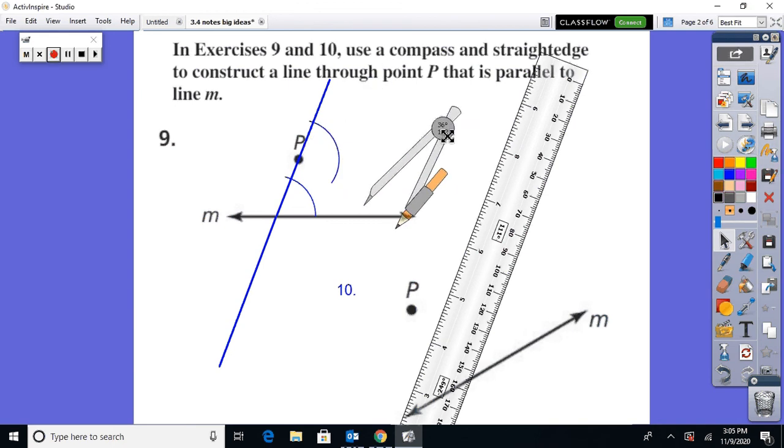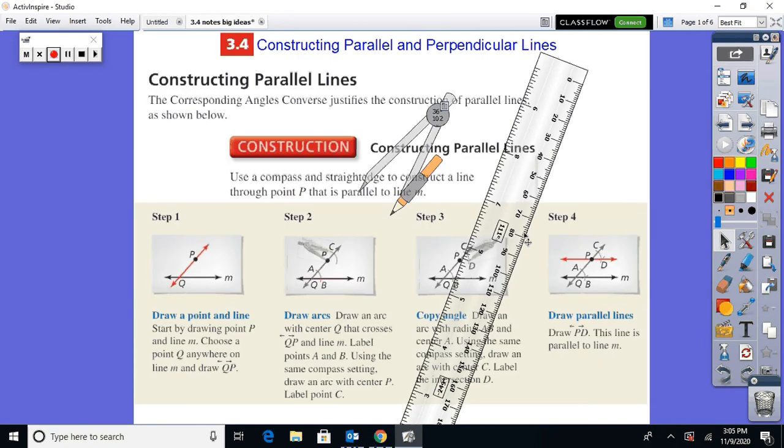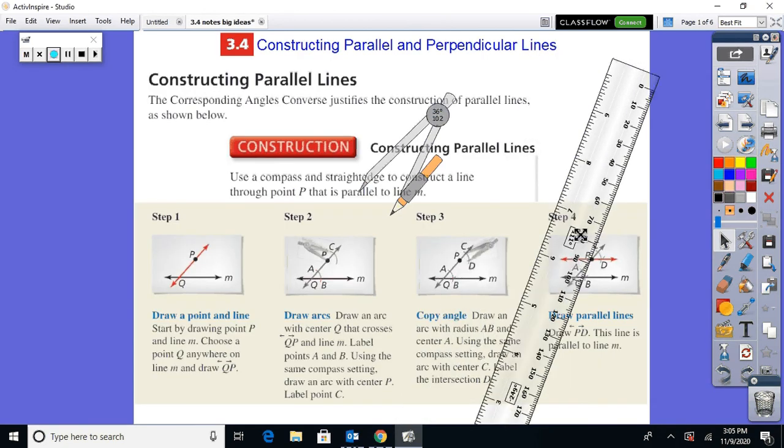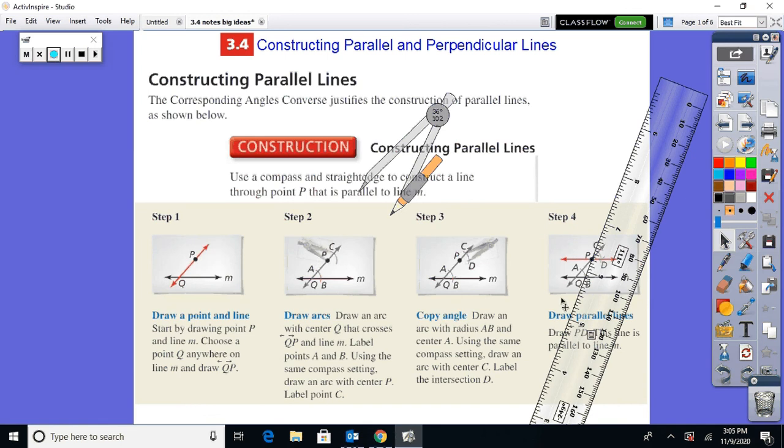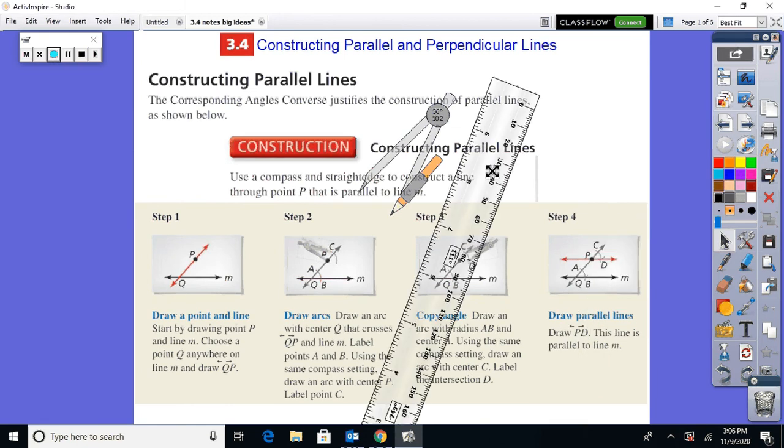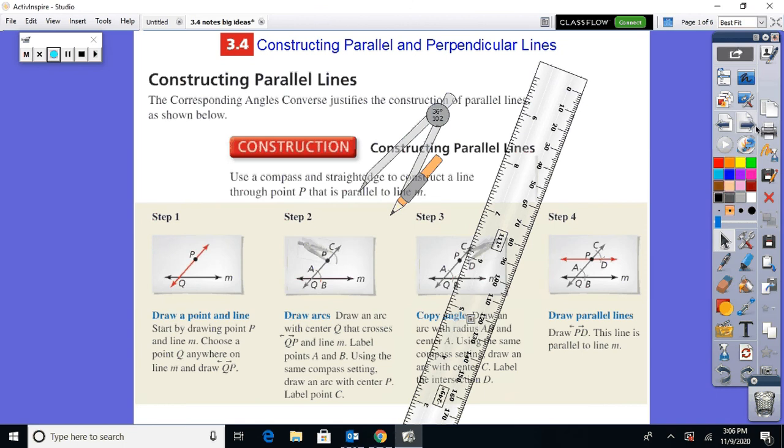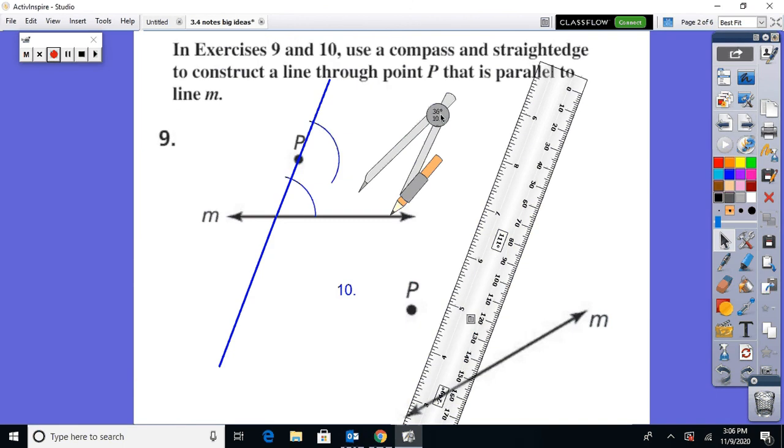Now, thinking back to how we found congruent angles, now you're going to take your compass setting. So following along here. Now we're at step three. Draw an arc with radius AB in the same compass setting. Draw an arc C. And then let's go ahead now. Back to our picture. And just like we did when we found the congruent angles, we want to measure this,